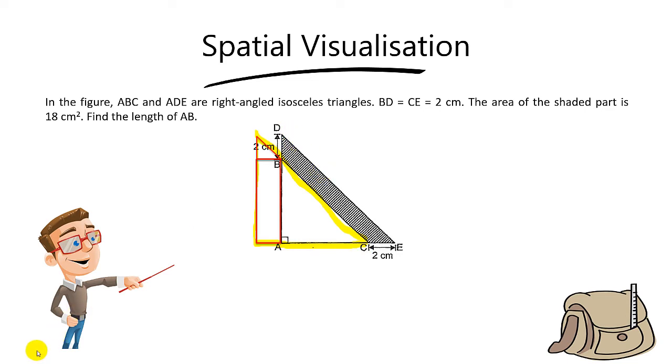After you move the triangle 2cm to the left, you get this yellow triangle. Obviously, if you move 2cm to the left, this length will also be 2cm.